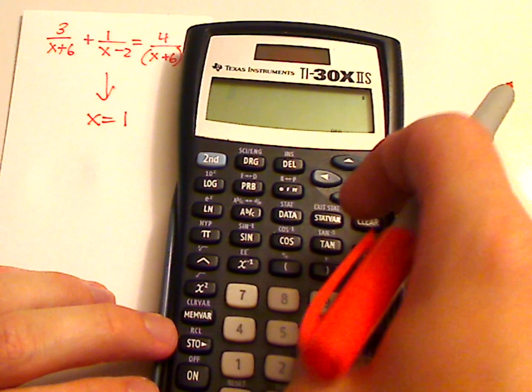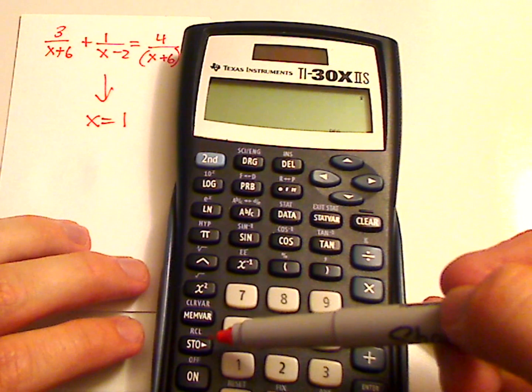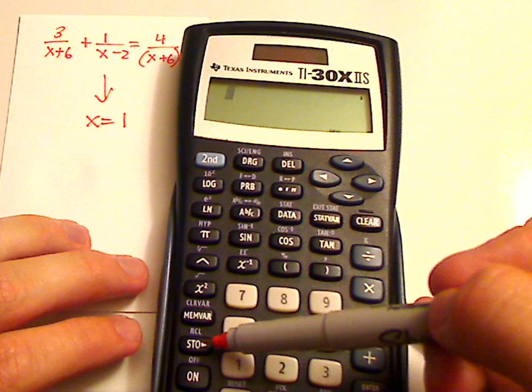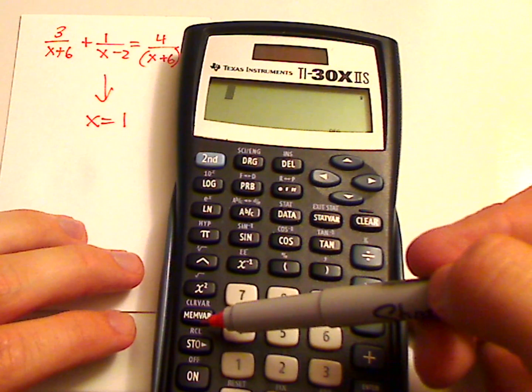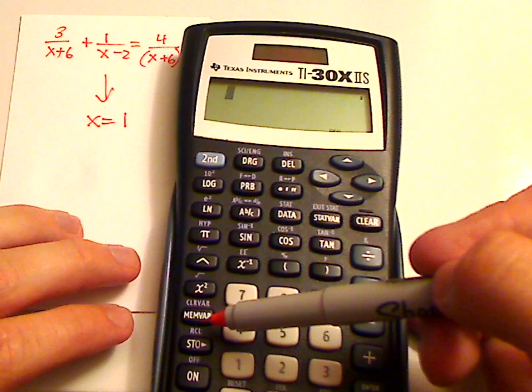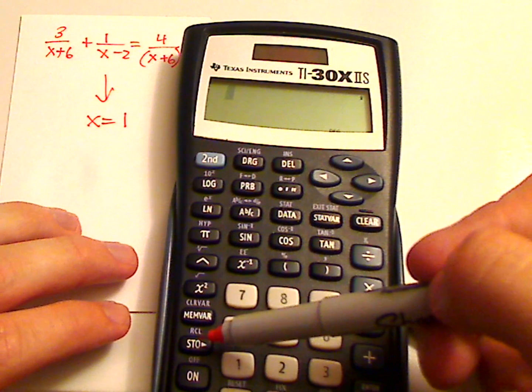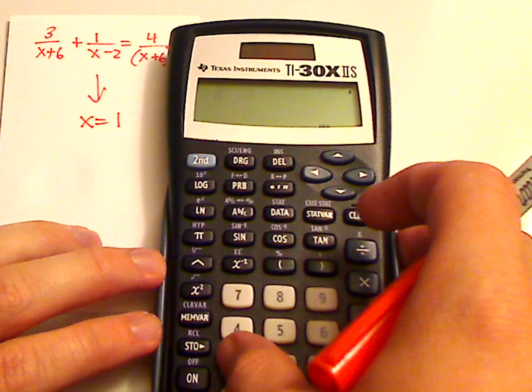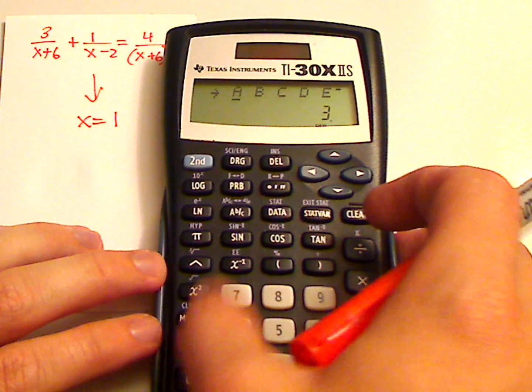So what you want to do with the calculator is use two buttons: Store or STO, and MEMVAR. MEMVAR is going to have all the variables in storage. So first you have to store them. Take the one and store it as a variable by pressing STO.